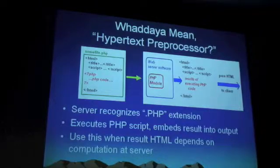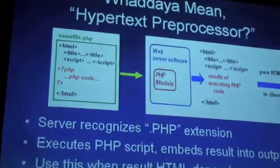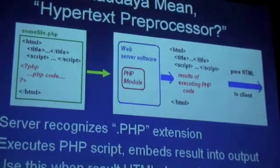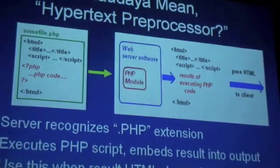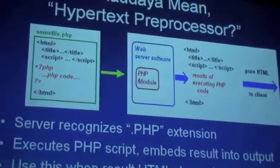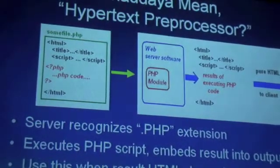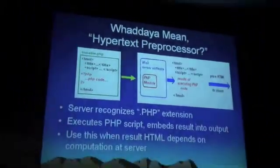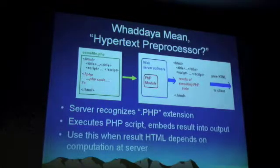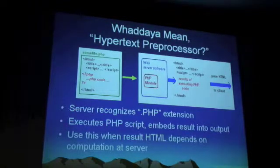The other time when you have to use PHP is when the result your user is going to see depends on a calculation that has to be done at the server. For example, you've got a schedule of activities — a calendar — the user clicks on one day and gets a list of events happening that day. You need a database on your server that knows all the events, you wait for the user to tell you the day, do a database lookup, and spit out the results. PHP is one of the easiest and quickest languages to actually get stuff done.